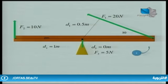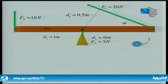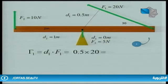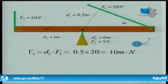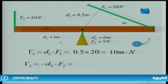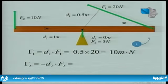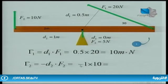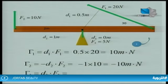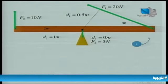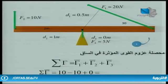نختار الاتجاه الموجب بعكس عقارب الساعة. عزم القوة الأولى = 0.5 × 20 = 10 متر·نيوتن وهو موجب. عزم القوة الثانية F2 سالب لأنها تحرك الجسم بعكس الاتجاه الموجب: ناقص 1 × 10 = ناقص 10 متر·نيوتن. عزم القوة الثالثة = 0 متر·نيوتن. محصلة العزوم = 10 − 10 + 0 = 0 متر·نيوتن، أي أن الجملة في حالة توازن.